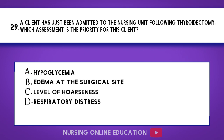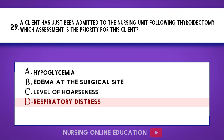Question 29. A client has just been admitted to the nursing unit following thyroidectomy. Which assessment is the priority for this client? A. Hypoglycemia. B. Edema at the surgical site. C. Level of hoarseness. D. Respiratory distress. The answer is option D: Respiratory distress.